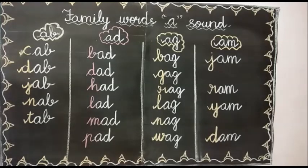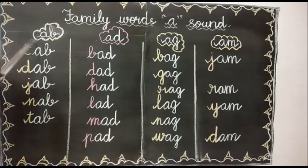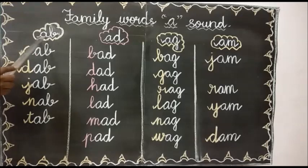Now we are going to learn the words with spelling. Shall we start? AB: A, B, ab.